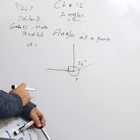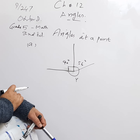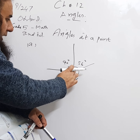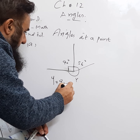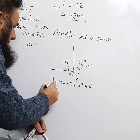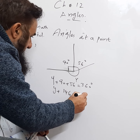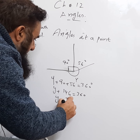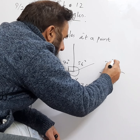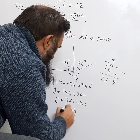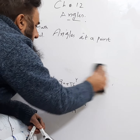We need to find the value of y. Since the angle marked l is a right angle, it is 90°. Because the angles form a complete circle at a point, their sum equals 360°. So y plus 90 plus 56 equals 360. Adding 90 and 56 gives 146, so y equals 360 minus 146, which is 214. So y is equal to 214.